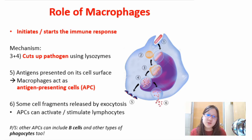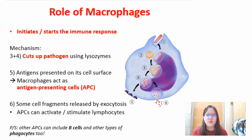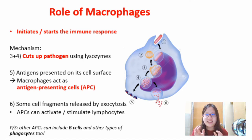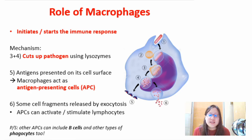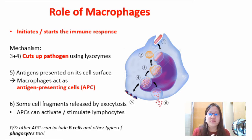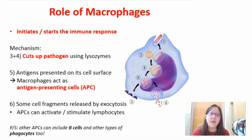This antigen-presenting process can also involve B cells and other phagocytes. Another cell type found in many resources — though not in our textbook — is called dendritic cells. The key point is that macrophages live longer, cut the pathogen up, present the antigens on their surface, and start off the immune response by activating and stimulating the lymphocytes.